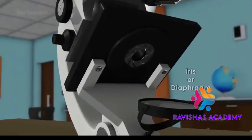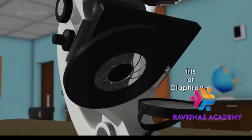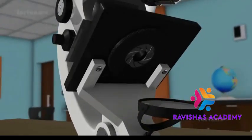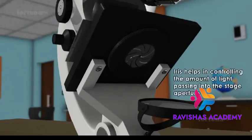Above the mirror, an iris, also known as a diaphragm, is present. The iris helps in controlling the amount of light passing into the stage aperture.